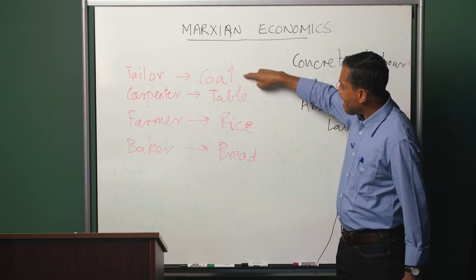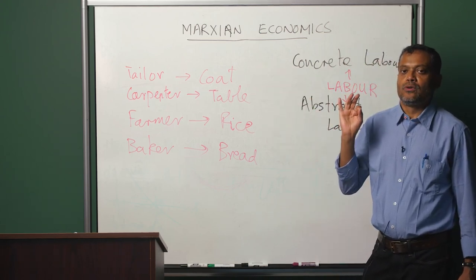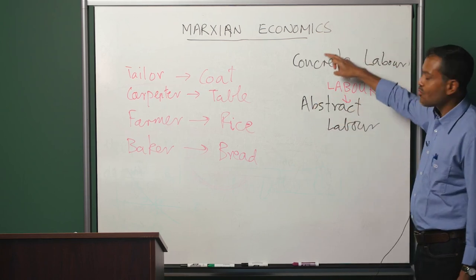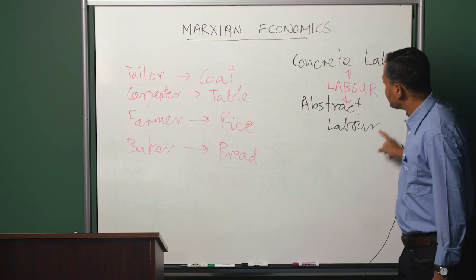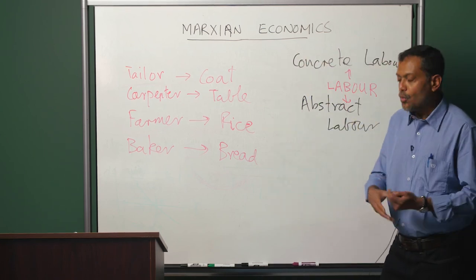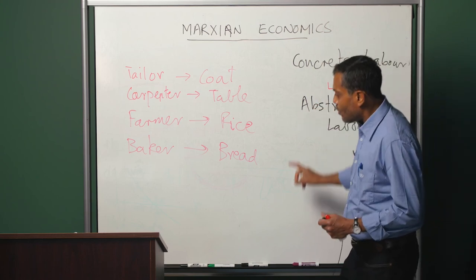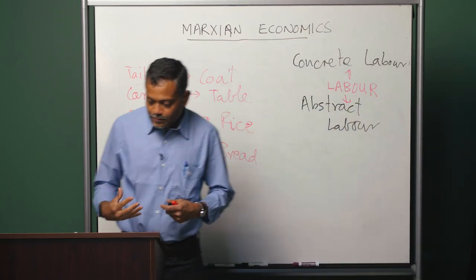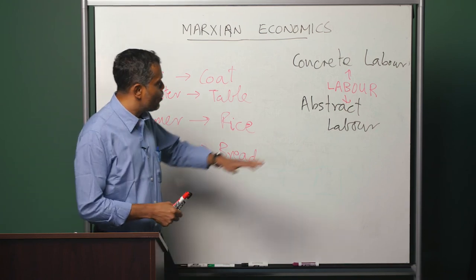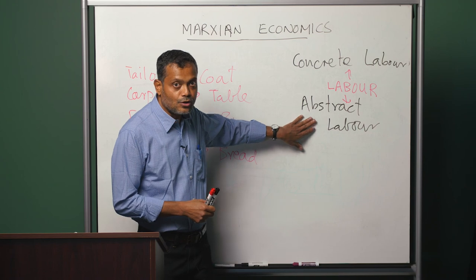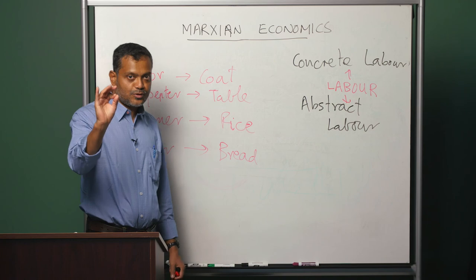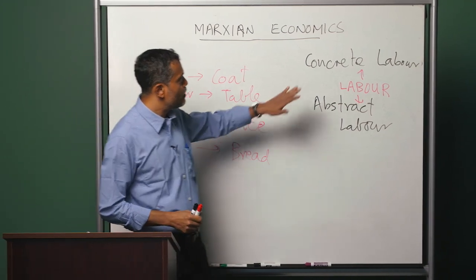Since every commodity has value, we would need to say that what creates value is not the concrete form of labor, but what is common to all these forms of labor. We can summarize by saying that the answer to the question 'what kind of labor creates value?' is abstract labor — what creates value is abstract labor rather than concrete labor.